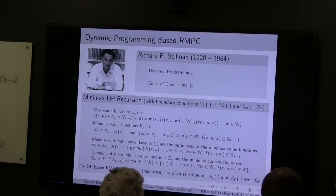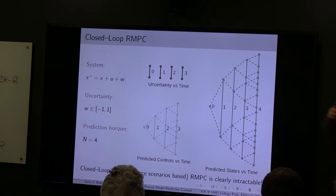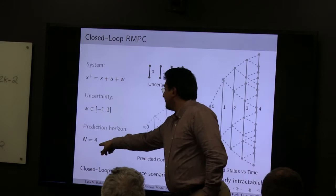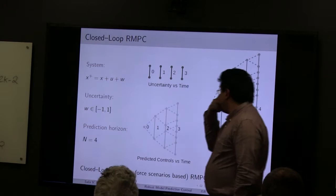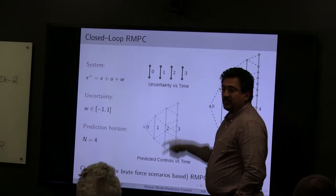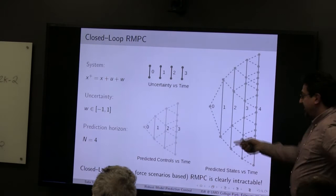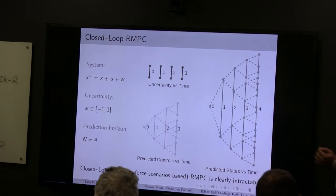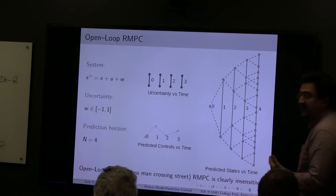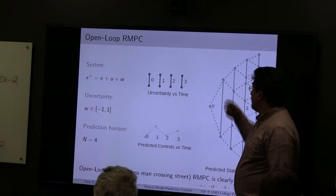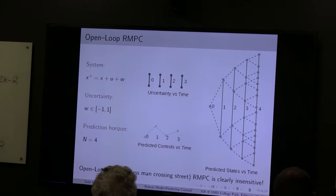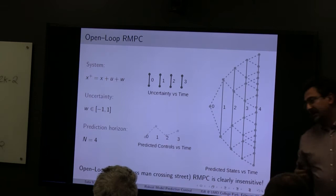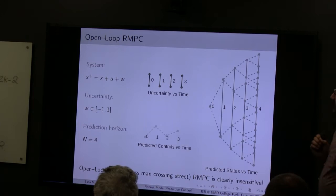For closed-loop robust MPC, even with a very simple system and predictions over four steps with disturbances between −1 and 1, you can enumerate all possible uncertainty scenarios and counteract controls to different scenarios, getting different state trajectories. But you are effectively building a tree of complexity q^N, where q is the number of vertices of the disturbance set — exponentially complex. So brute-force scenario-based MPC is clearly intractable. On the other hand, ignoring uncertainty entirely — applying a single control with respect to all disturbances — is like a careless person crossing the street without looking. You might be lucky, but very likely not. Open-loop robust MPC is not a smart idea.